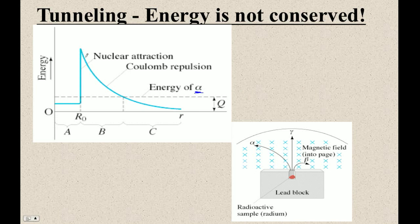We can actually plot the energy curve of an atom. And there's something called alpha capture. All these reactions we can pretty much reverse — if we give an alpha particle enough energy, we can actually get the nucleus to gobble it up.